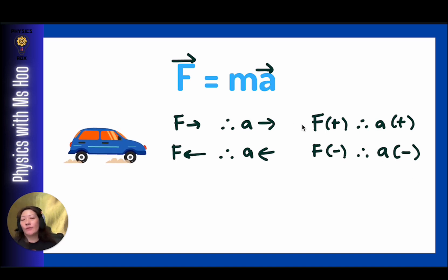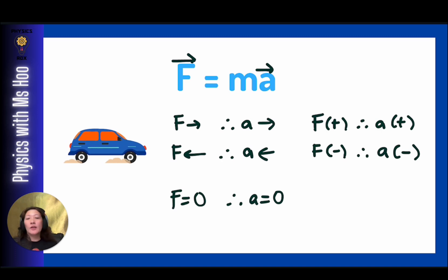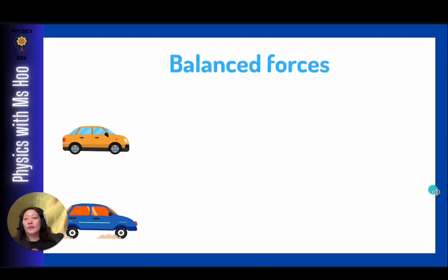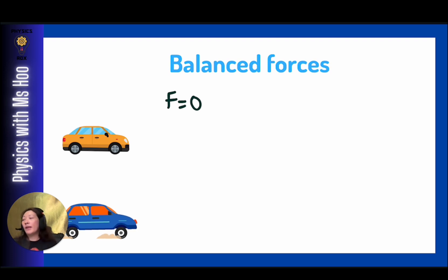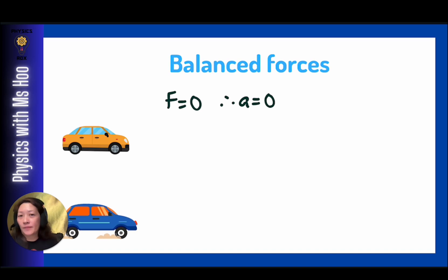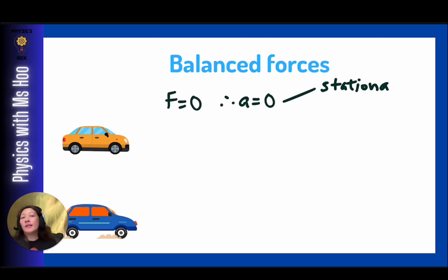One more important point: if F is zero, the acceleration is zero. A net force of zero causes zero acceleration. This is a balanced force situation. A common assumption students make is that zero acceleration means the object is not moving — that's not necessarily true. Zero acceleration could mean the object is stationary, but it could also mean the object is moving with constant velocity.